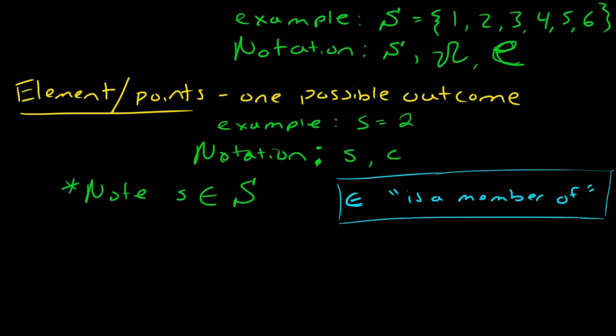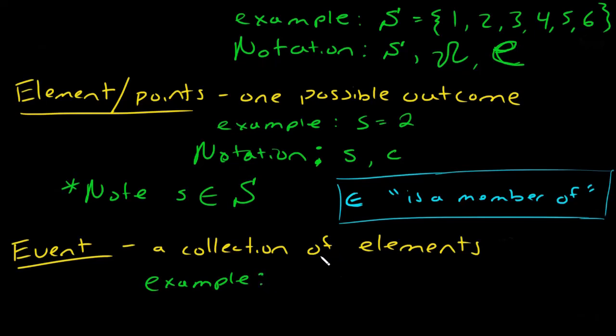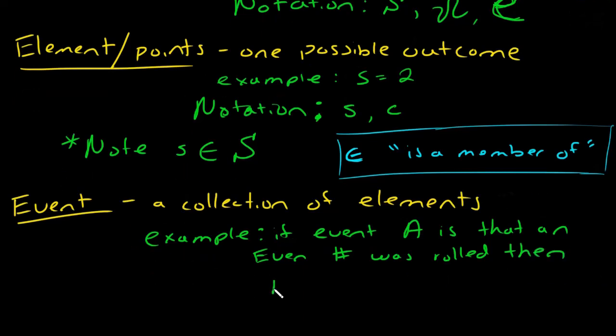Next we have event. This is a collection of elements. For example, you may see us say, if event A is that an even number was rolled, then we'd go ahead and give what A is. A would be two, four, or six. Those are all the even numbers on your die.